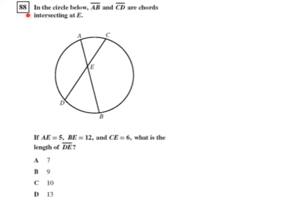Question 88 from the geometry CST released test questions. In the circle below, line segment AB and line segment CD are chords intersecting at point E.